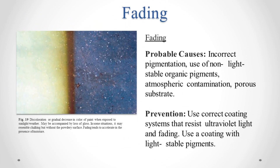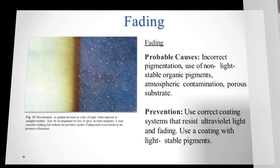Fading. Probable causes: incorrect pigmentation, use of non-light-stable organic pigments, atmospheric contamination, porous substrate. Prevention: use correct coating systems that resist ultraviolet light and fading. Use a coating with light-stable pigments.